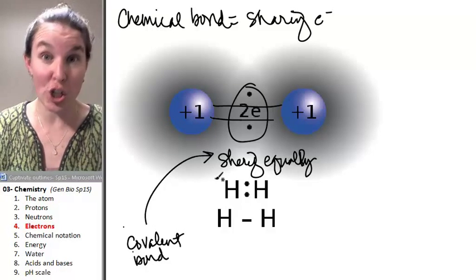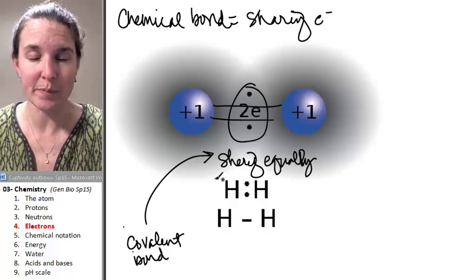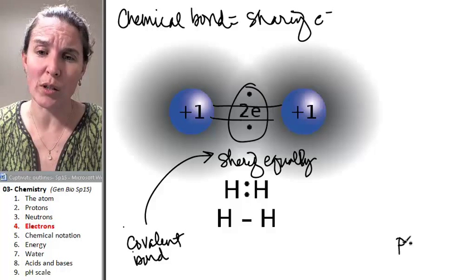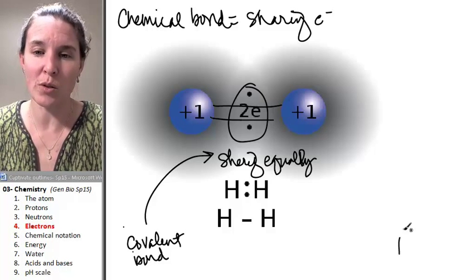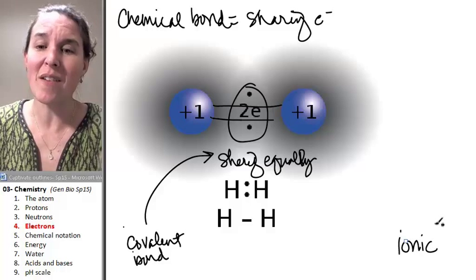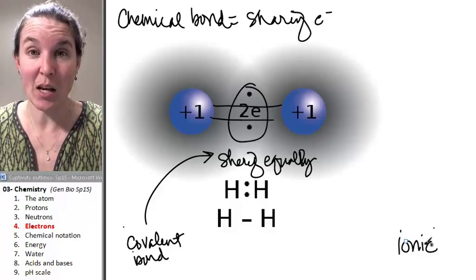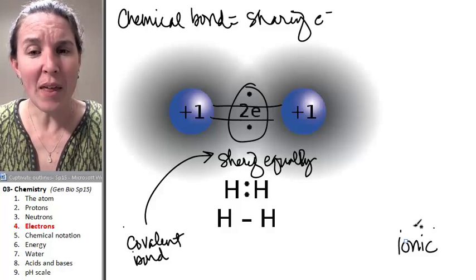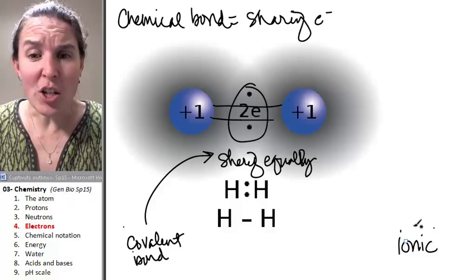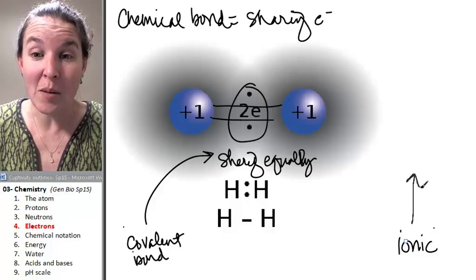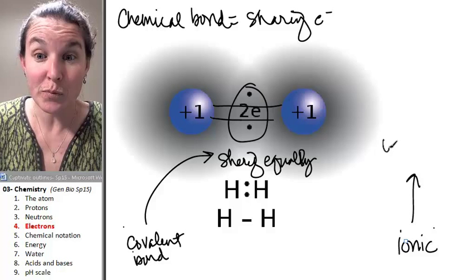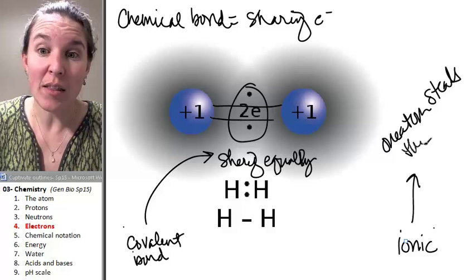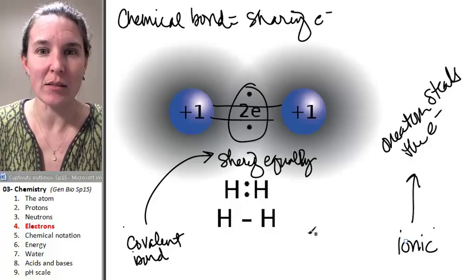Covalent bonds share atoms equally. My children tend to be more of the polar. Or, no, excuse me. They tend to be more of the ionic bond, not ironic. Ionic, isn't it ionic? But they do not share at all. In fact, in an ionic bond, one atom steals the electrons completely.